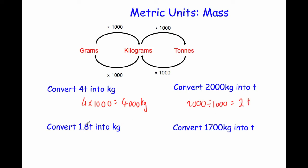Next, convert 1.8 tonnes into kilograms. Again we multiply by 1,000. So 1.8 times 1,000 equals 1,800 kilograms.